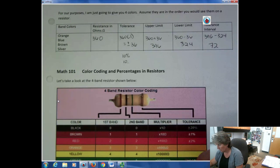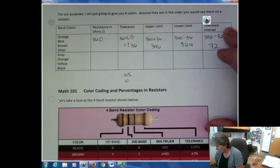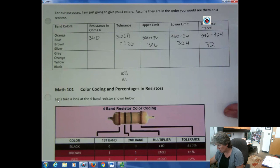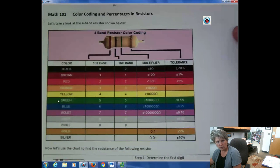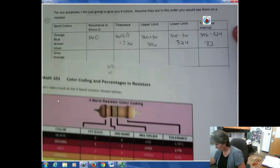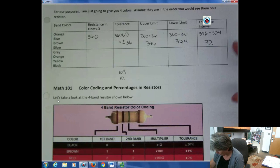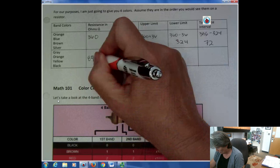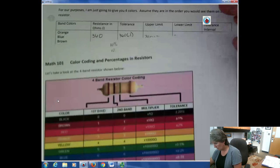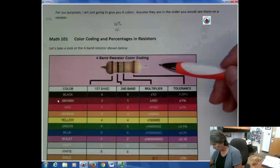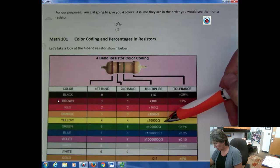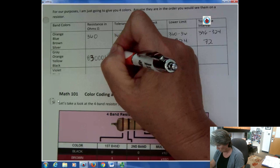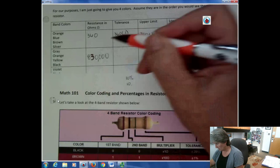The next example has gray, orange, yellow, and black. Gray is 8, orange is 3 — so 83. Yellow is our third band (the multiplier), and it tells us to add four zeros. So our resistance is 830,000 ohms.